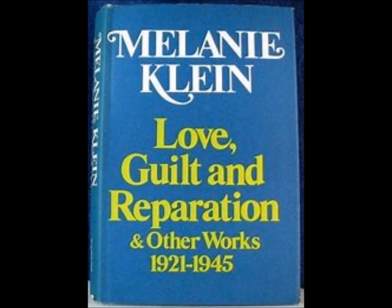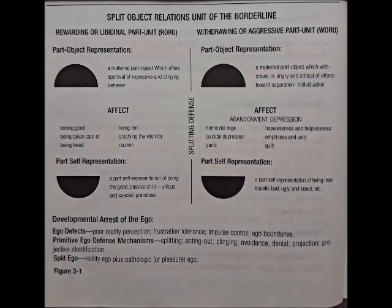First we'll start with the borderline. In Masterson's diagram, recall they only relate to part objects — and isn't this reminiscent of the paranoid schizoid position, ages 3 to 4 months? This is exactly why there is the black and white thinking and everything in absolutes. On the left side, labeled the libidinal or rewarding object relations unit, and the other side the withdrawing, aggressive part unit. In the case of these personality disorders, both sides are kept apart by the mechanism of splitting.